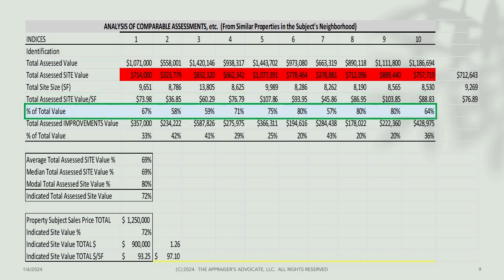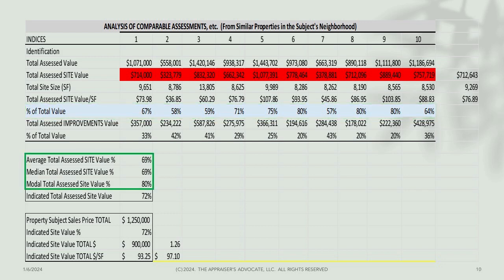Now we get into the meat of this worksheet. Via simple division, we extract from these data that, looking at property number one, $714,000 is 67% of $1,071,000. The worksheet then carries this mathematical function out to the right. Thus, it's clear vacant site assessments go from about 58% of the total assessment to about 80%. As you can see, the average site assessment is 69% of total assessed value. The median is also 69%, while the modal vacant site assessed value is 80%.